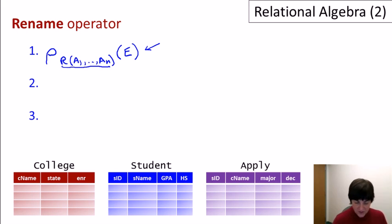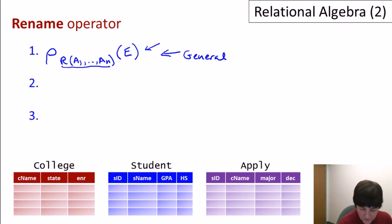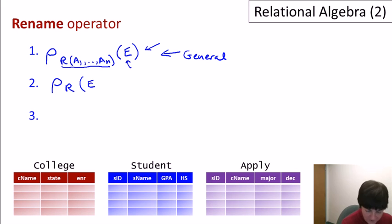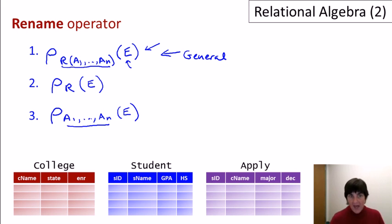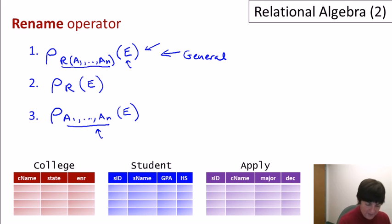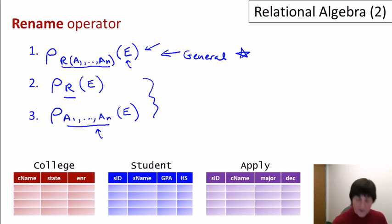There are a couple of abbreviations for the rename operator. The general form renames both relation name and attributes. One abbreviation: if we just want to use the same attribute names from E but change the relation name, we write rho sub R applied to E. Similarly, if we want to change just the attribute names, we write an attribute list and keep the same relation name. This form must include an attribute list to be distinguishable from the previous form. These are just abbreviations — the general form covers everything.